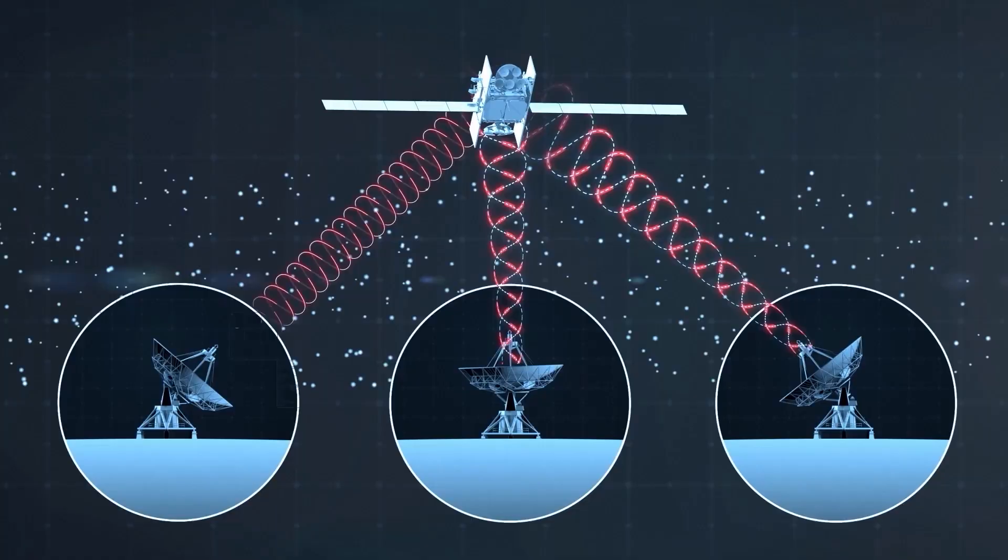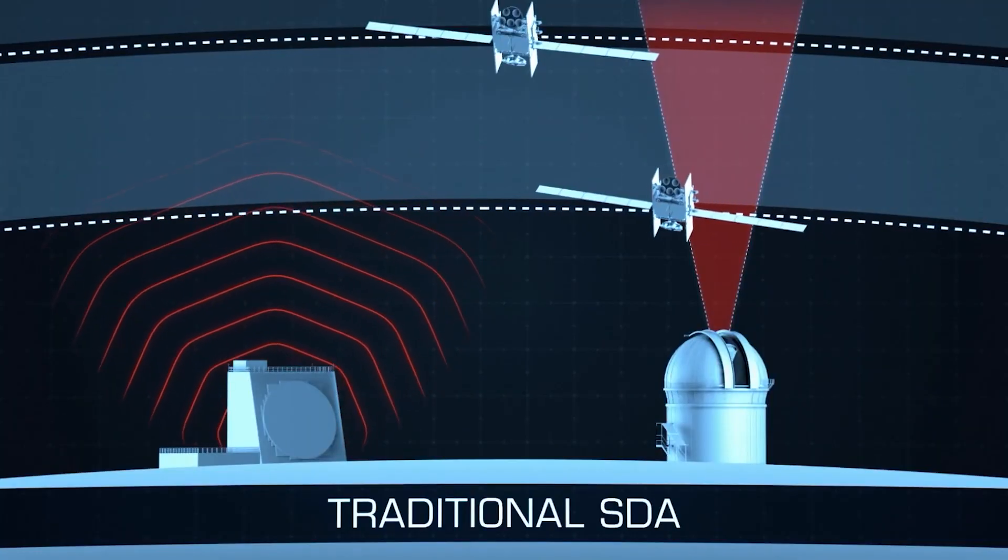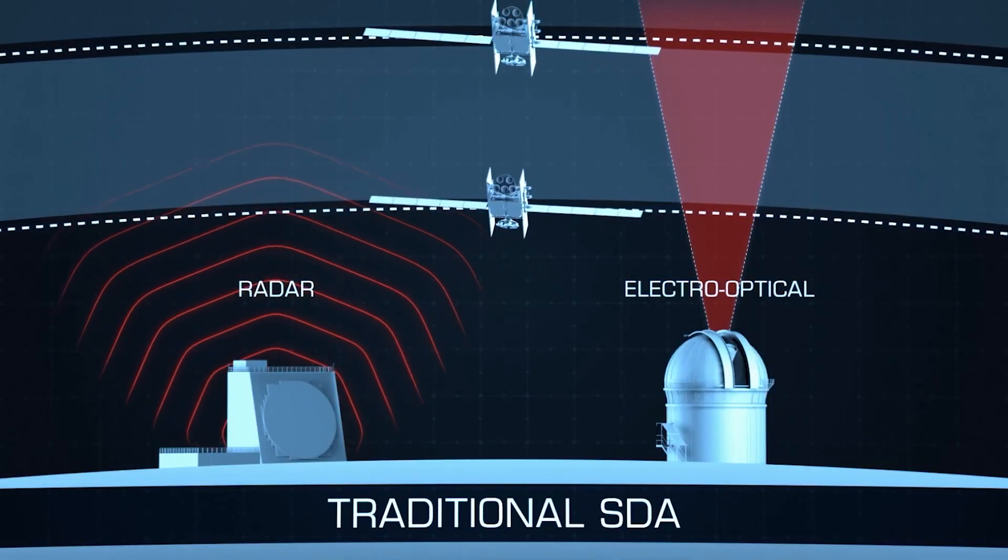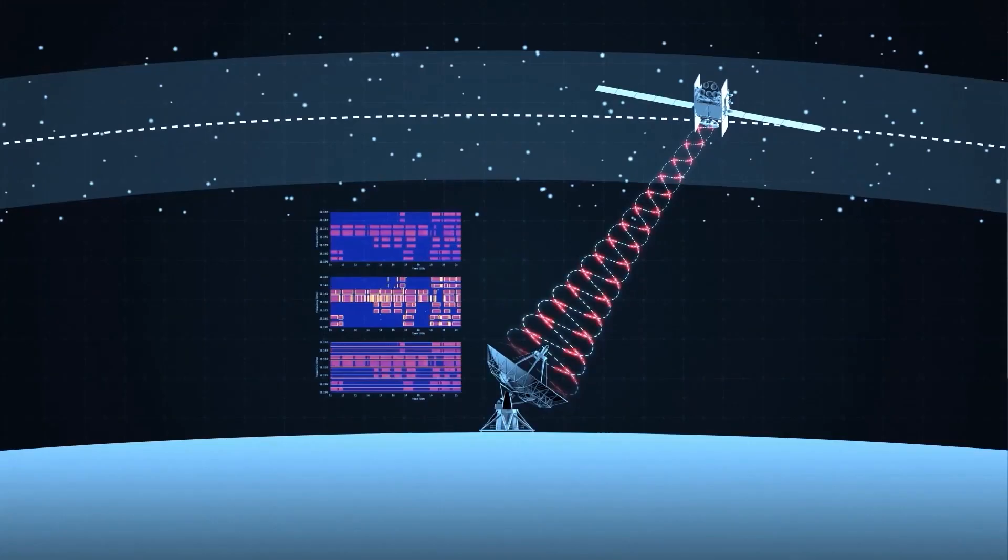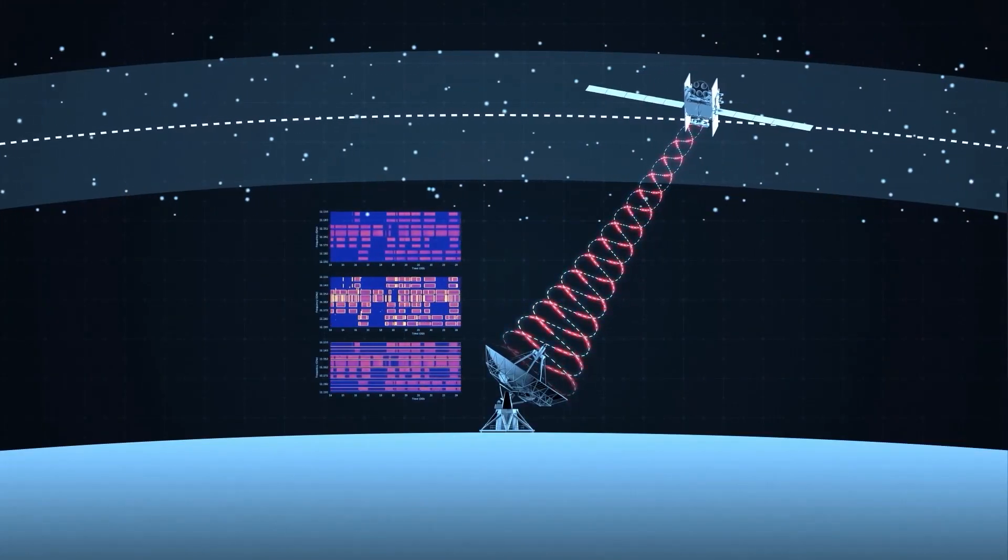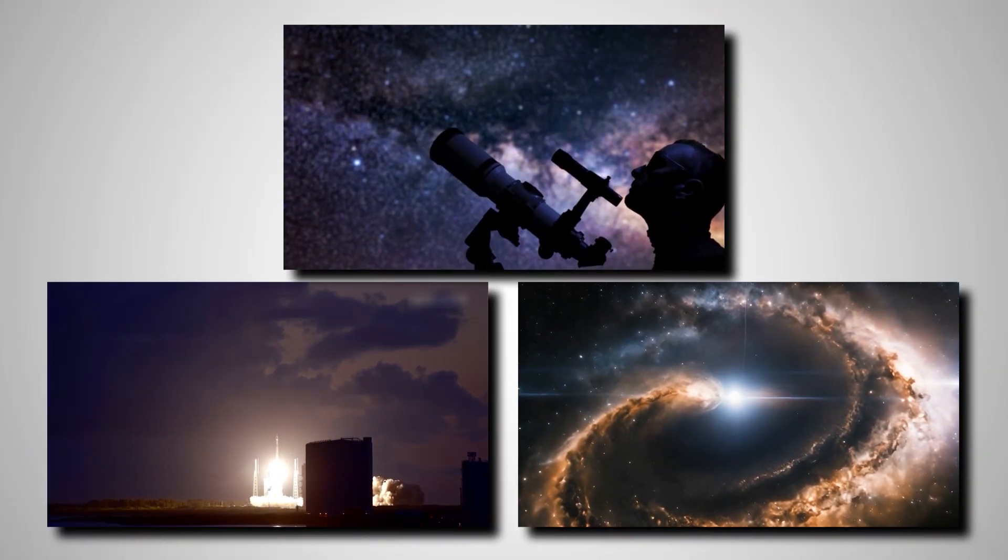This constant vigil uses a complex web of ground-based radars and telescopes, along with space-based sensors like the Space-Based Space Surveillance satellite, which orbits at an altitude of about 390 miles, giving it an unobstructed view of objects around Earth.